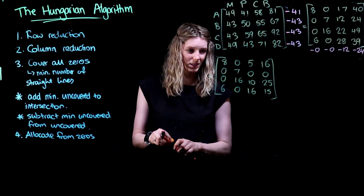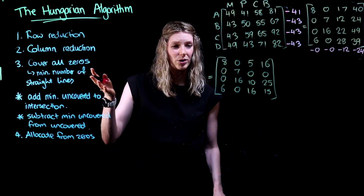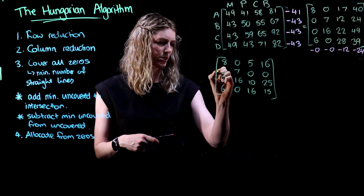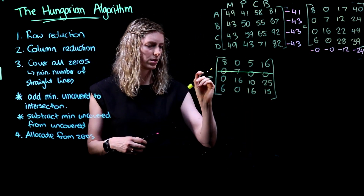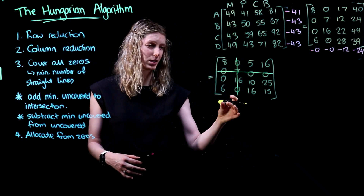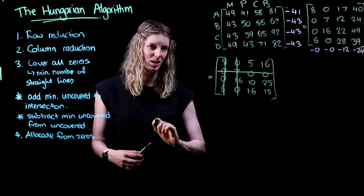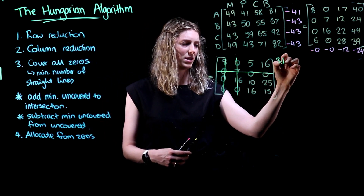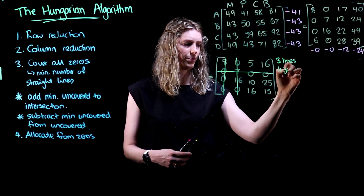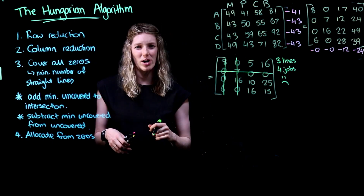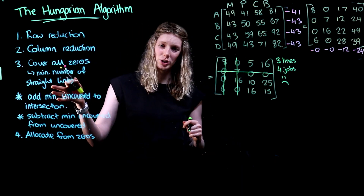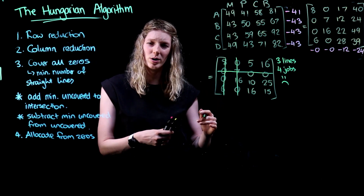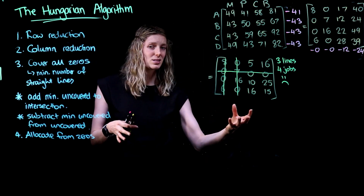Now that we've completed this reduction, we are going to attempt to cover all zeros using the minimum number of straight lines. Thinking of the lines that could be the best bang for our buck, I'm going to put one in our second row to get three zeros, one in our second column to get two zeros — that leaves only one zero left. So we've ended up with three lines but four jobs, which is not going to work for our allocation at this stage.